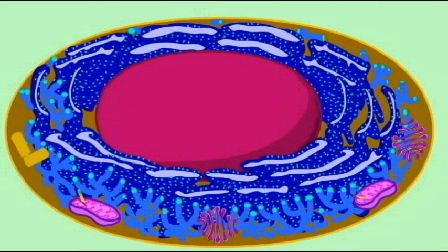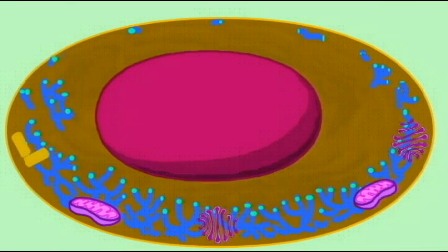For example, mitochondria and chloroplasts are the size of bacteria, the shape of bacteria. They reproduce through fission, the way that bacteria do.